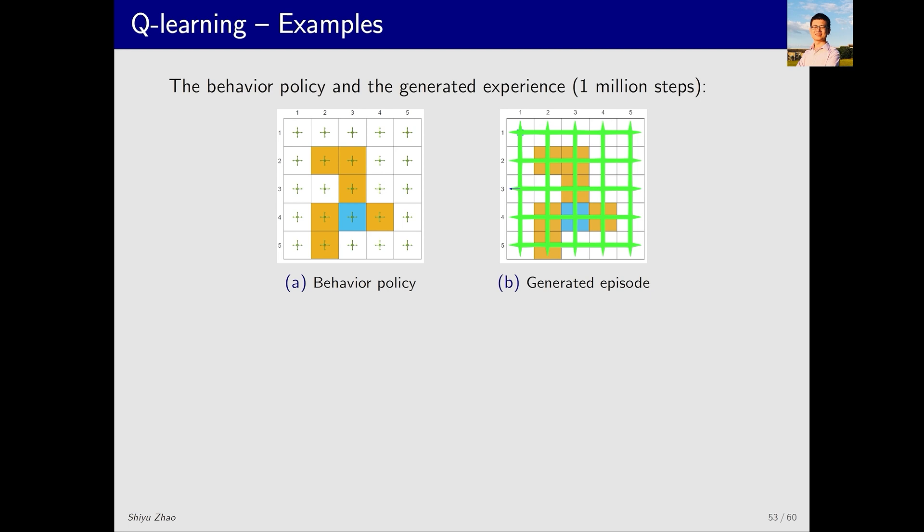First, we select a behavior policy and use this behavior policy to generate a lot of samples. This behavior policy has already been illustrated with arrows. It is essentially a uniformly sampling policy. That means at each state, where we have five actions, each action is given a probability of 0.2, indicating strong exploratory behavior. As shown in the right figure, if we have a million steps in this episode, each state action pair is visited many times, so these samples are quite good.